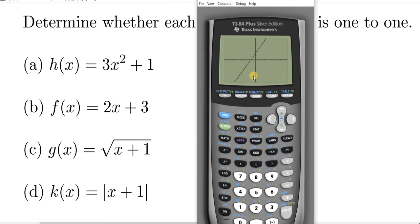So this time, no matter how many horizontal lines we draw, they will only cross the graph one time. So the answer to b would be yes, it is one to one.